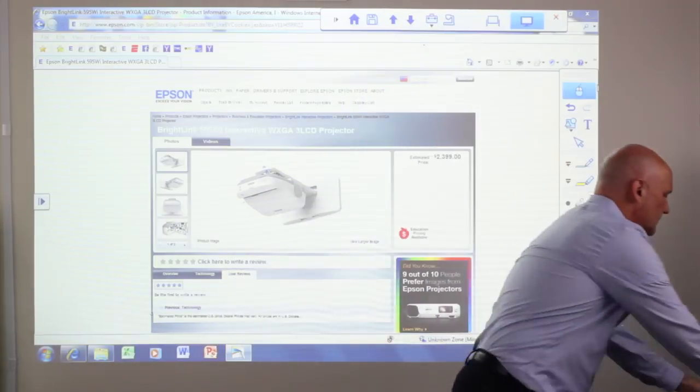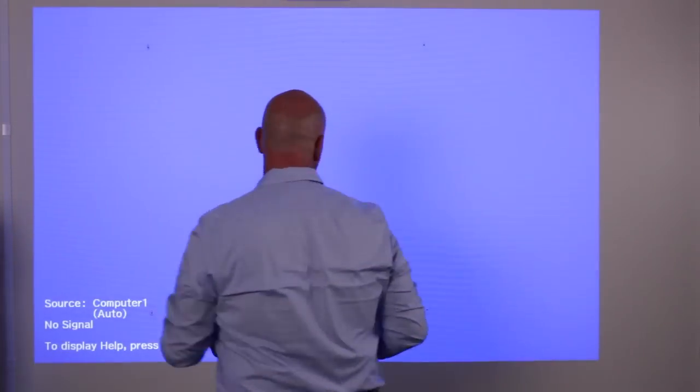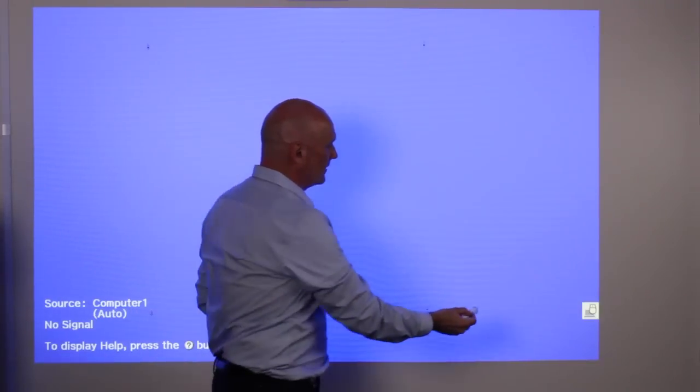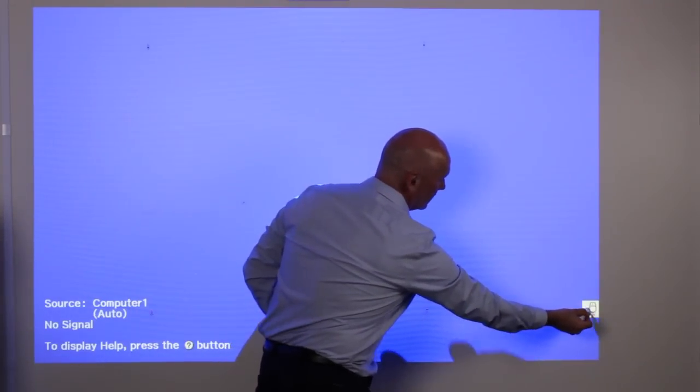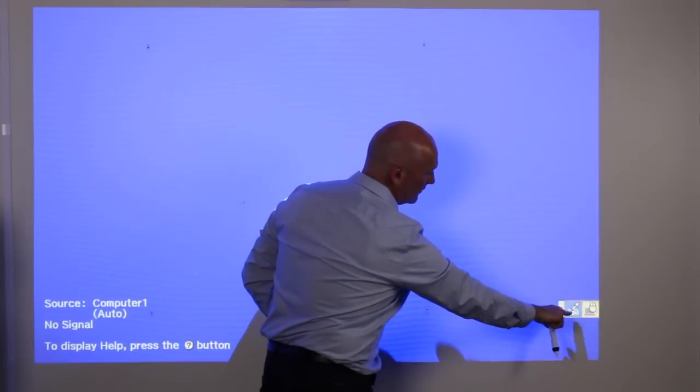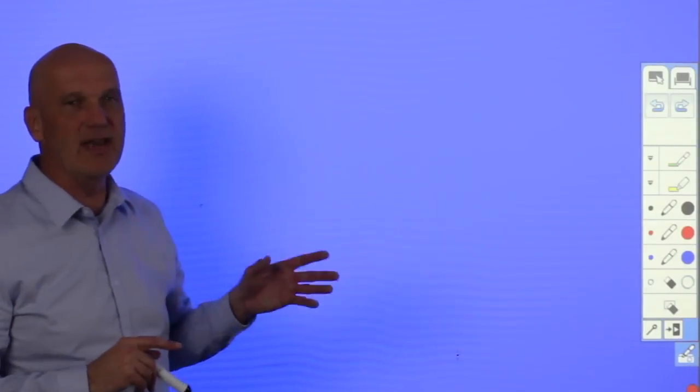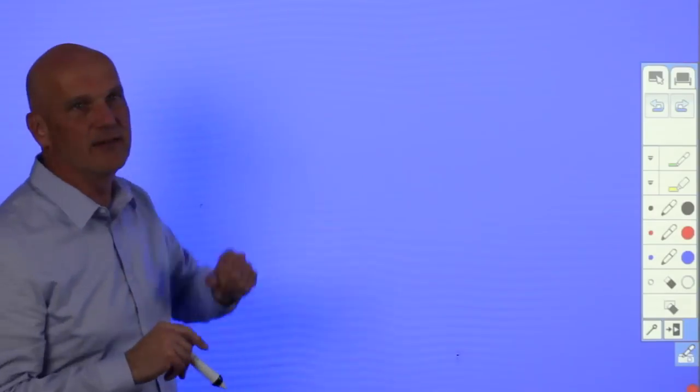And I will demonstrate that by disconnecting my computer. In doing so, you'll see this blue screen comes up and when I touch it with my pen, I can come over and select this icon which shows the computer projector with the pen. At this point, it brings up an embedded toolbar that exists inside of the projector.